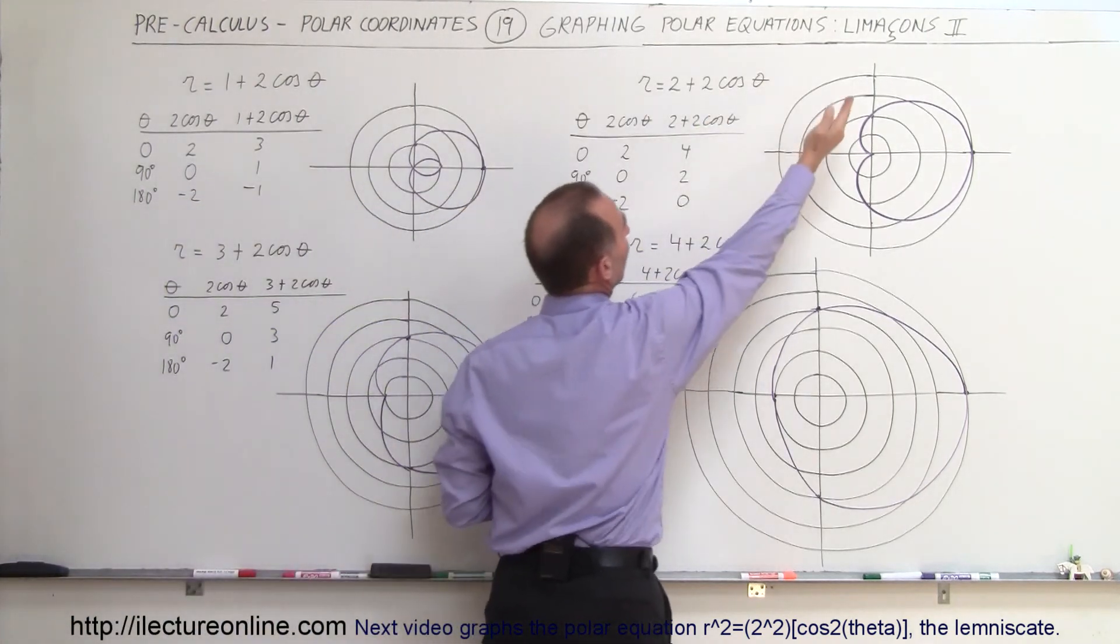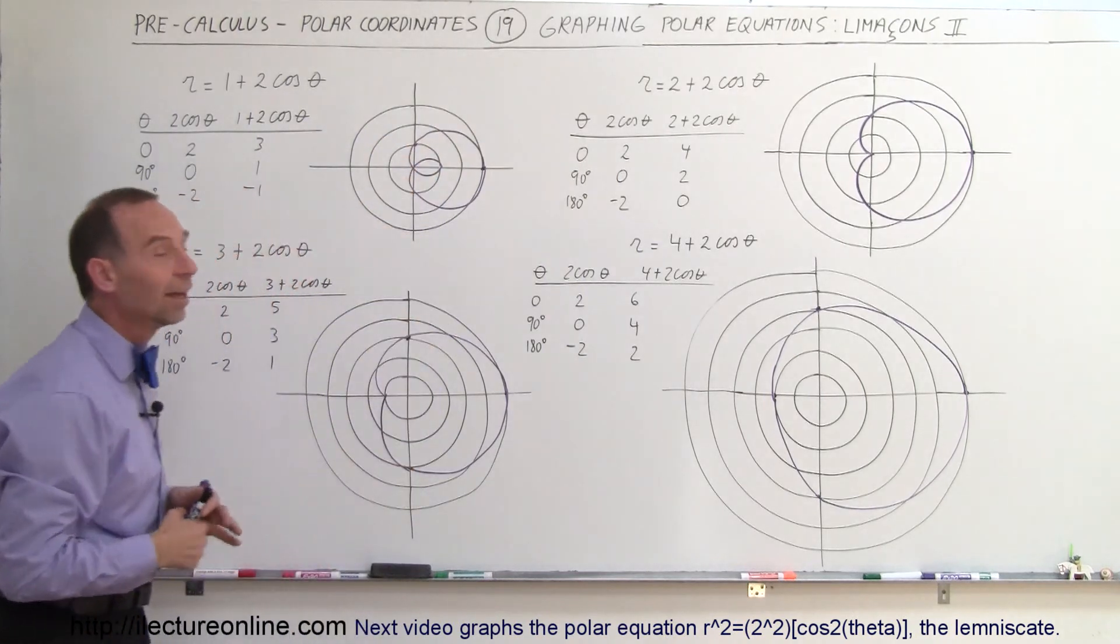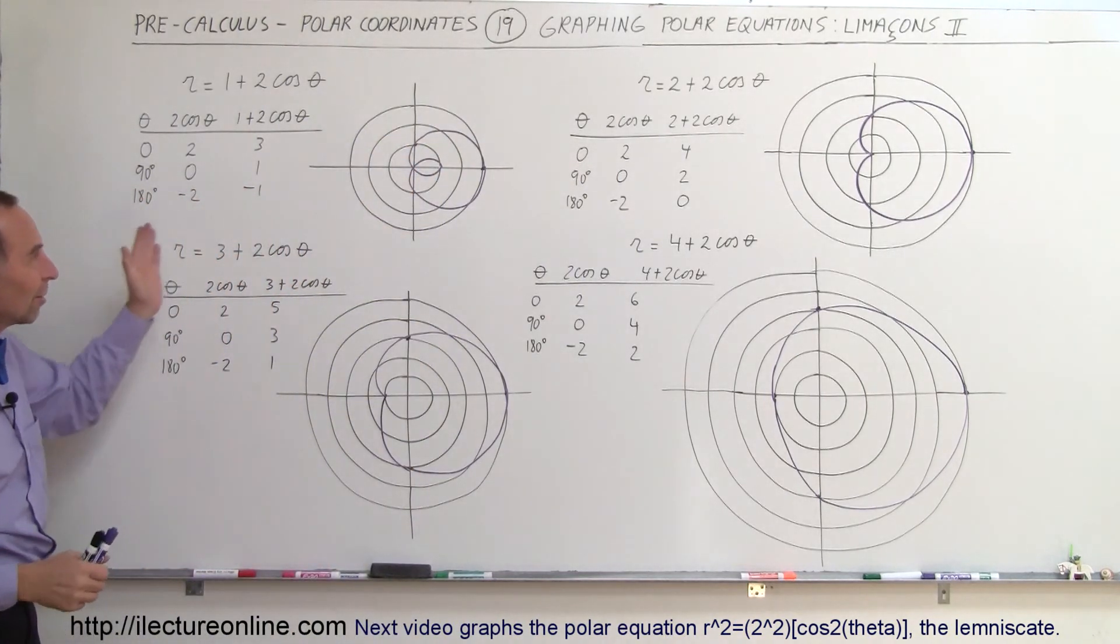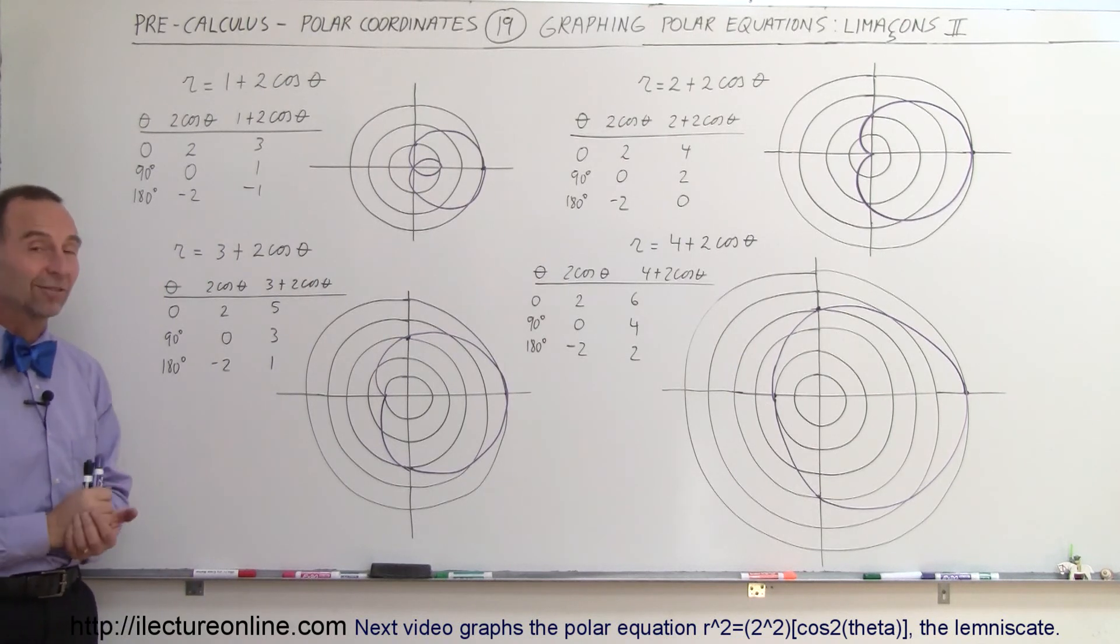If it's exactly the same value, you get an indentation to 0, and then if it's less, then you get that little loop on the inside. And so you can see the differences by simply changing the constant in that limaçon polar equation. That's how we figure that out.